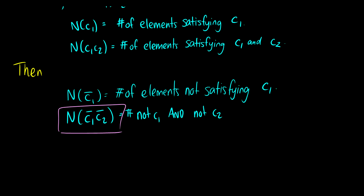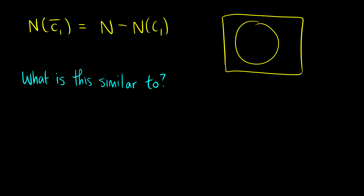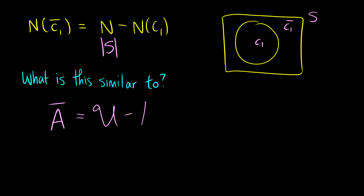What is this similar to? Well, n(not C1) is the same thing as the total number of elements — sometimes called S or U for our universe — and then we subtract all the conditions that fulfill C1. This is very similar to set theory, where C1 is the first set and not C1 is the outer set. If you have A bar, that equals the universe minus A — an exact analog to what we're doing.